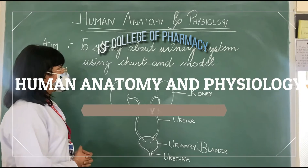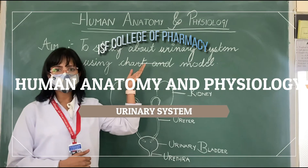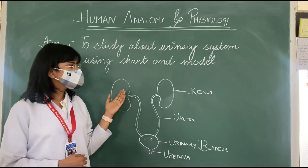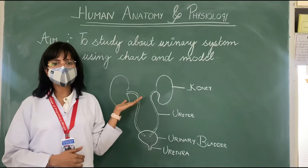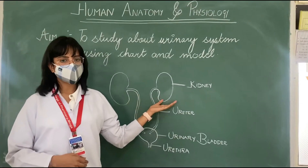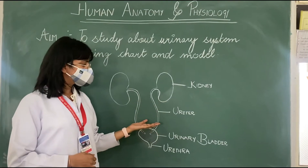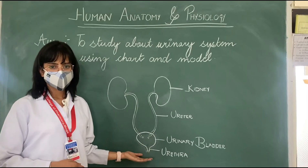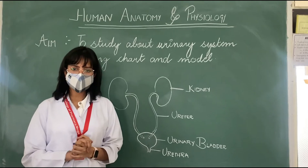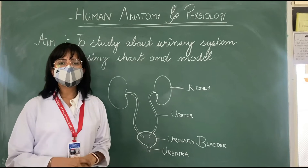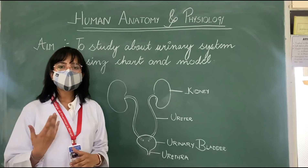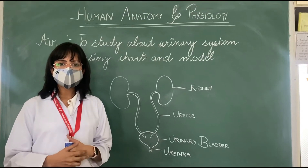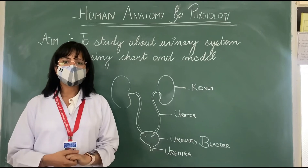Today our aim is to study about the urinary system using charts and models. The urinary system, as you can see in the diagram, consists of a pair of kidneys, a pair of ureters, one urinary bladder, and urethra. The functions of the urinary system are to produce urine, and it helps in maintaining electrolyte balance, water balance, and acid-base balance of the body.